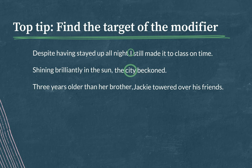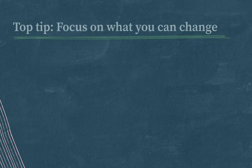'Three years older than her brother, Jackie towered over his friends.' Top tip: focus on what you can change. In a modifier placement question, only part of a sentence will be underlined, so focus on that underlined part.